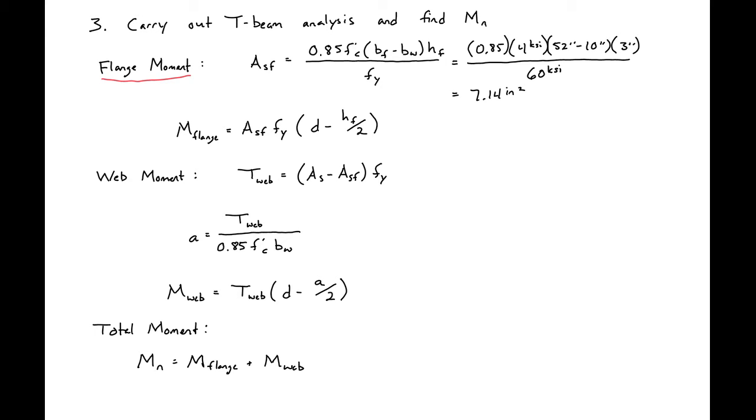Then we can use this to find our flange moment. We'll plug in our values: 7.14 inches squared times 60 ksi times our d which is 16 inches minus 3 inches the height of our flange, divided by 2, to give us our moment due to the flange steel force couple being 6,212 kip inches.